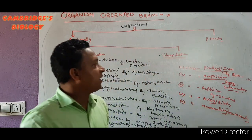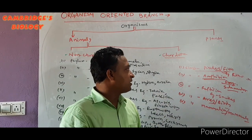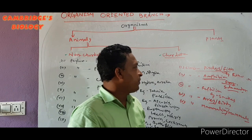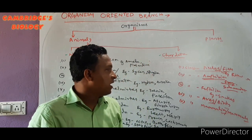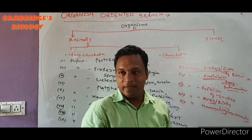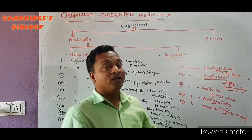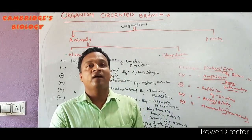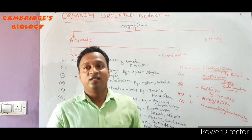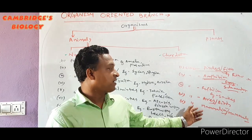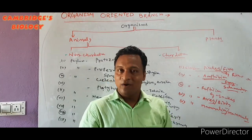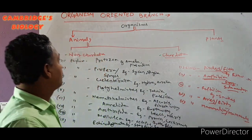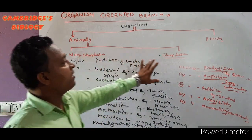So Chordata has five classes: Class Pisces, Class Amphibia, Class Reptilia, Class Aves, and Class Mammalia. Mammals include Human, Lion, Tiger, Cow — all of these come under Class Mammalia. This is the basic fundamental about Non-Chordata and Chordata.